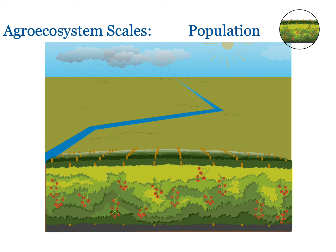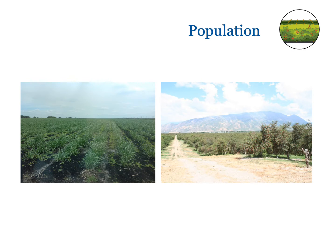A group of organisms in the same species is a population. This example is a monoculture of tomato plants, or a population of tomatoes. On the left is sugarcane, a crop population that tends to take up a large land area. On the right is a cherry orchard, another monoculture plant population. Understanding how plants grow in a population is important for field level crop management and production.